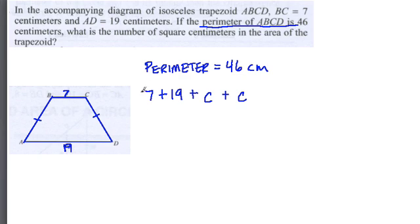So we're saying here that the perimeter is equal to 7 and 19, and then 2 unknowns, and that equaled 46. So here, 2C, or C plus C is 2C, plus 7 and 19 is 26. That equals 46. Now we can solve for C.